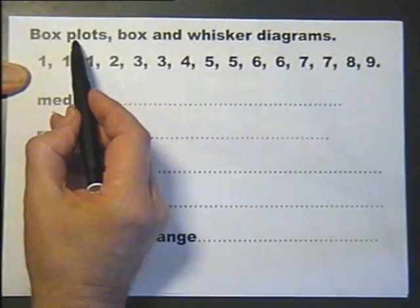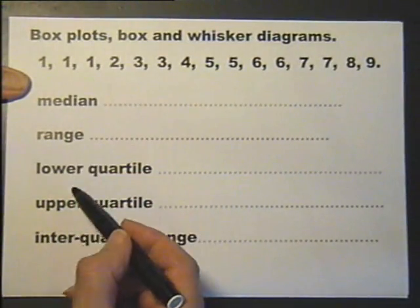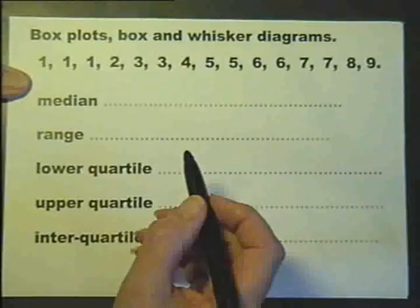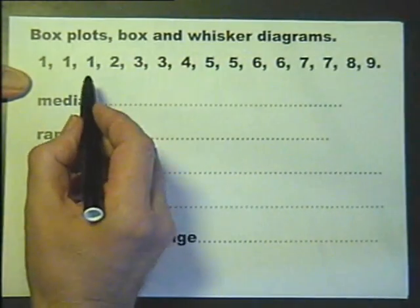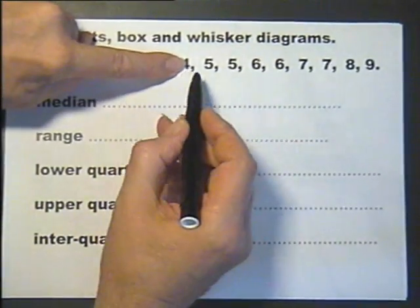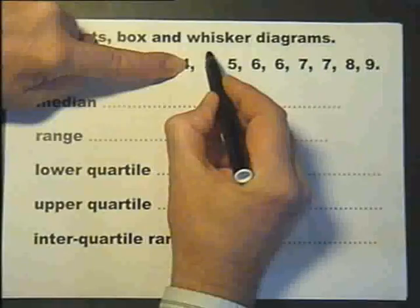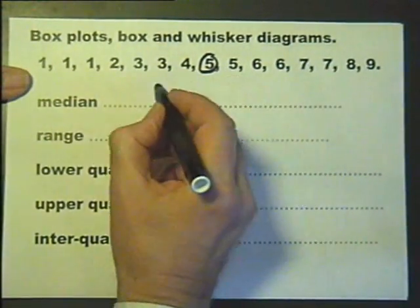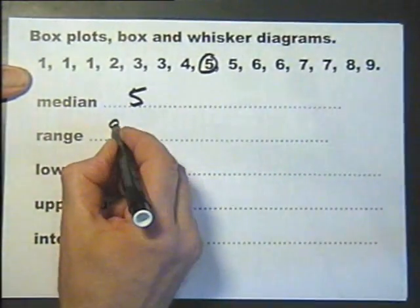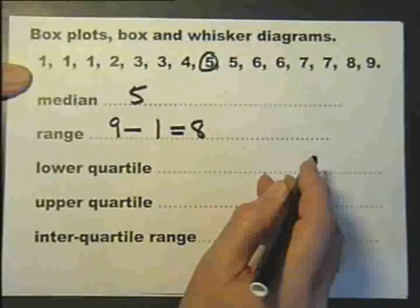Before we show you what a box plot is, or is it a box and whisker diagram, we need to just revise these phrases and words, which I'm sure you know. But anyway, median. Median's in the middle. 1, 2, 3, 4, 5, 6, 7. 1, 2, 3, 4, 5, 6, 7. So that's in the middle. The range is the largest number minus the smallest number. So that's the range.